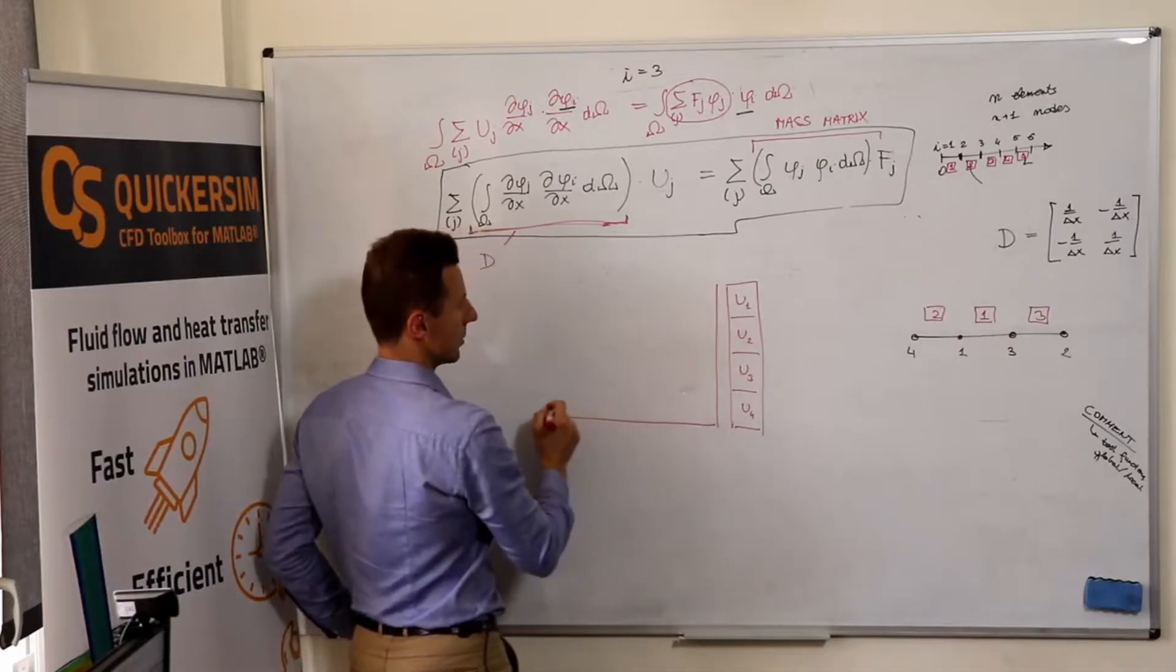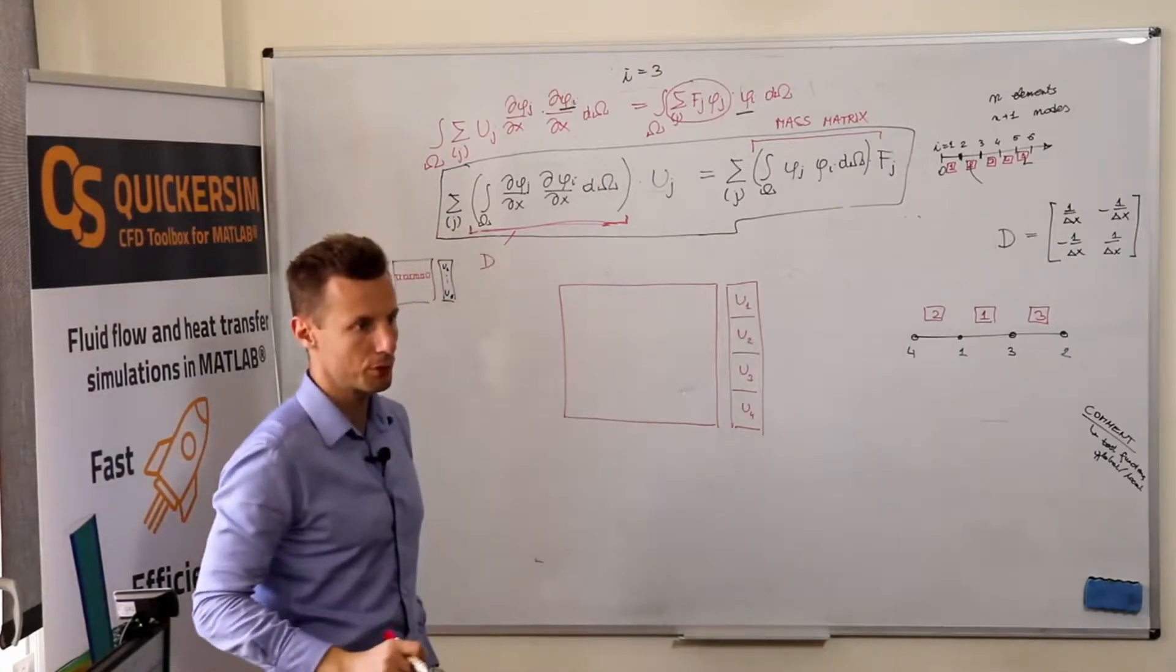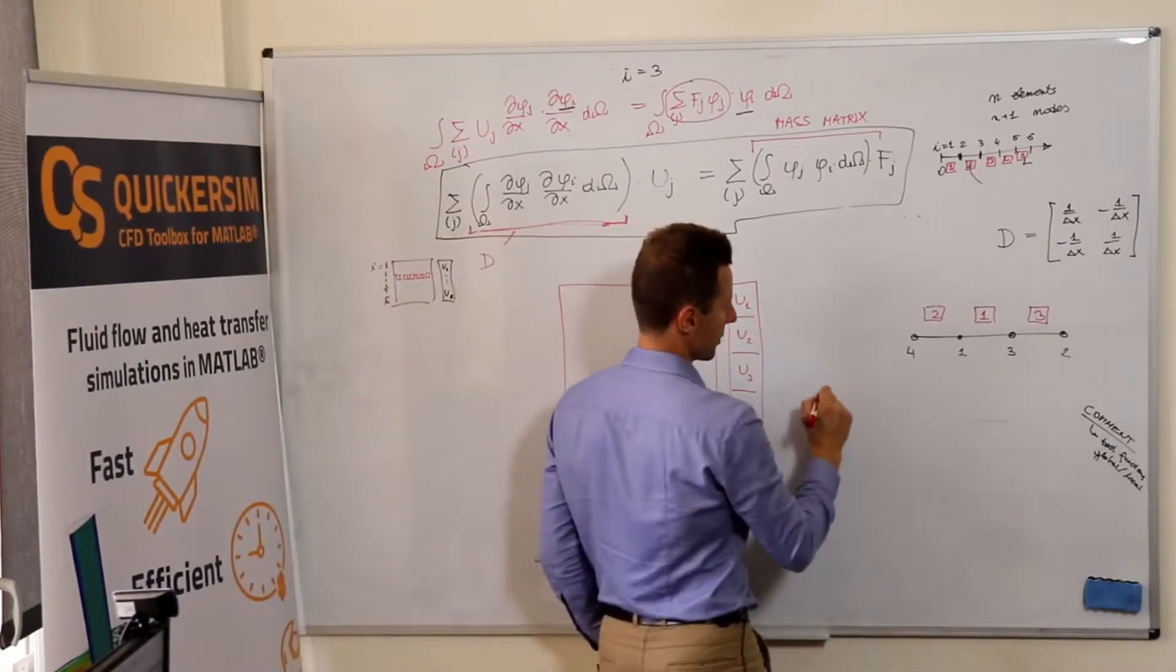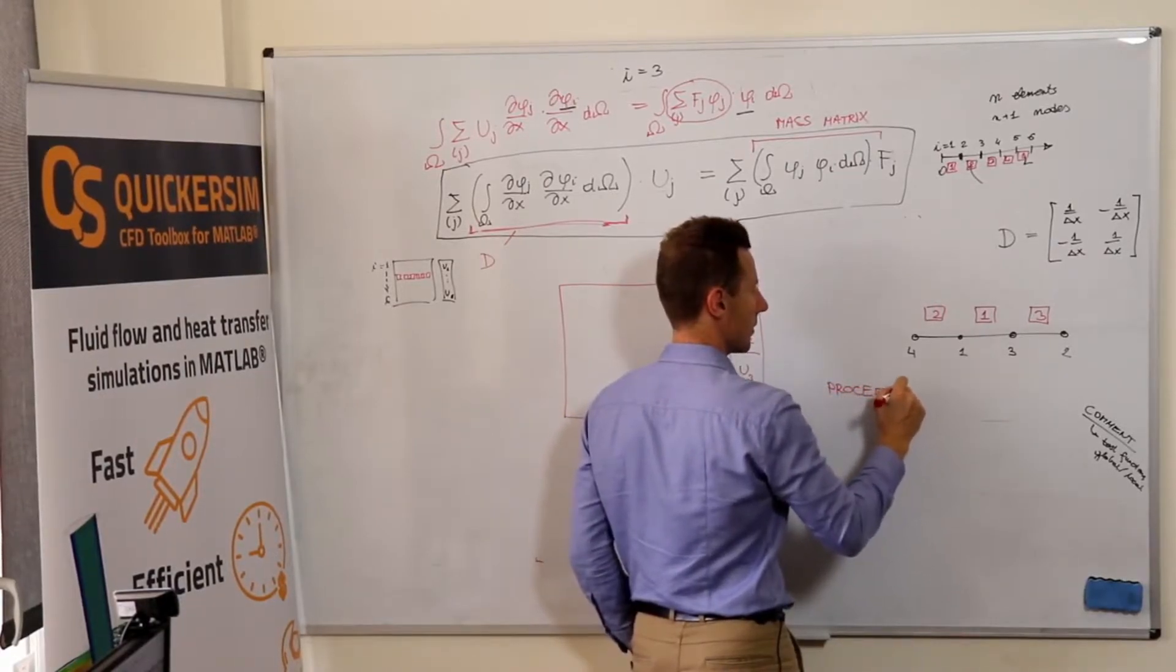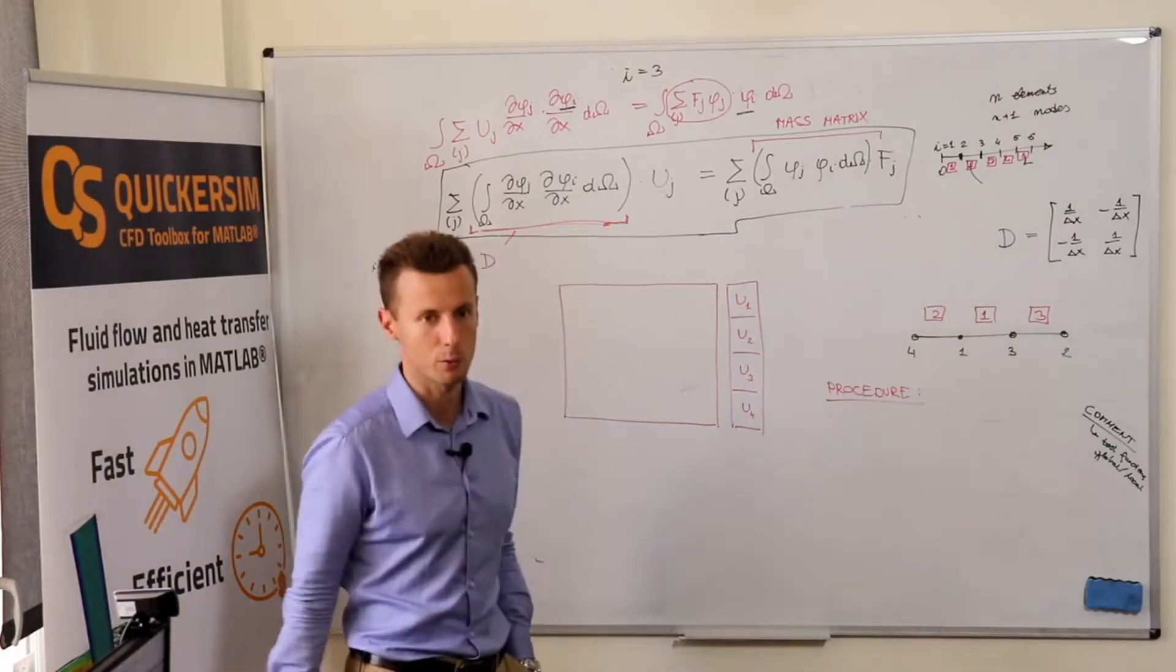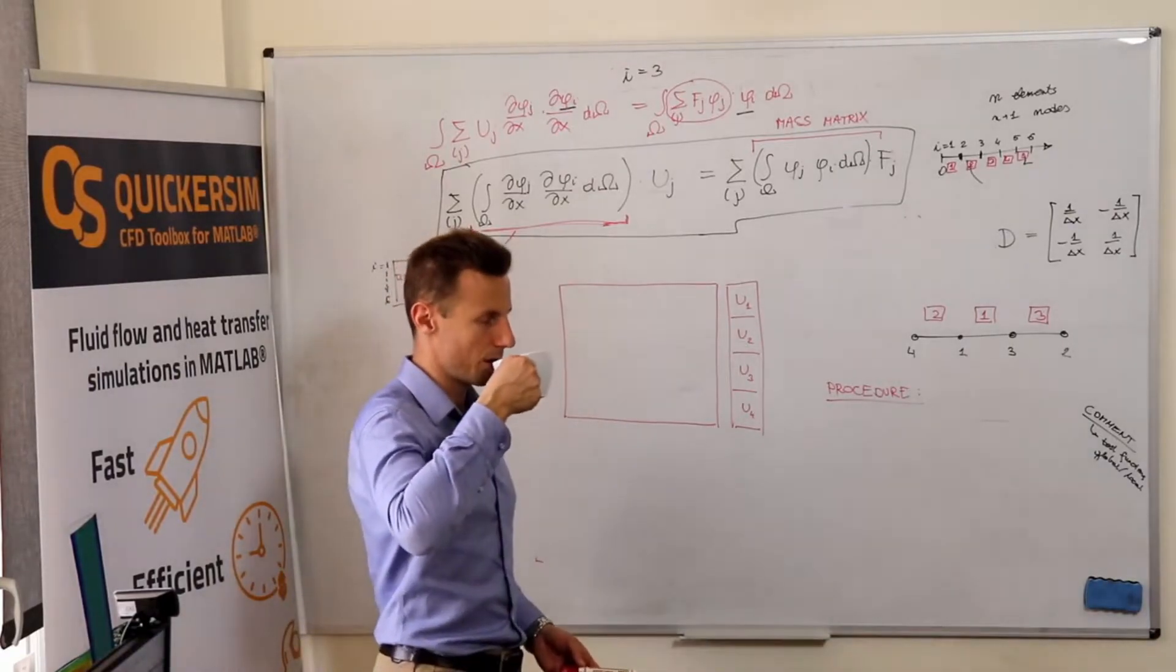So we need to come up with the matrix which is also four by four. Let's start doing that. The procedure, the efficient procedure to do it—because you can come up with many ways to loop over elements and nodes—but the efficient procedure is the following.